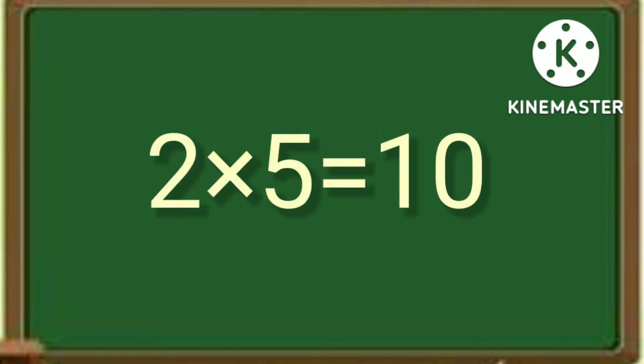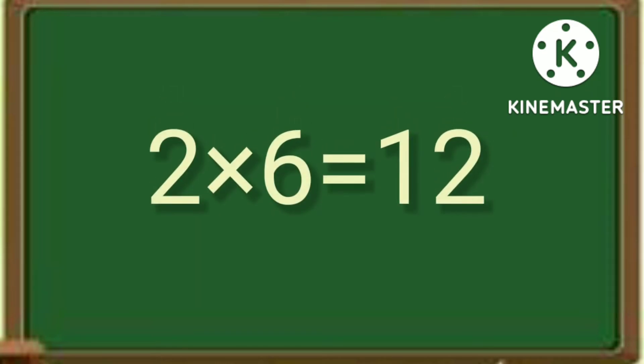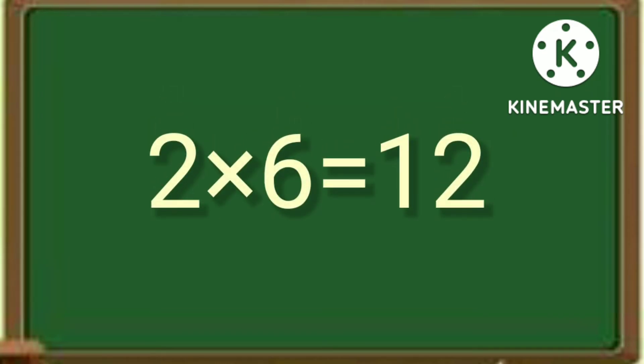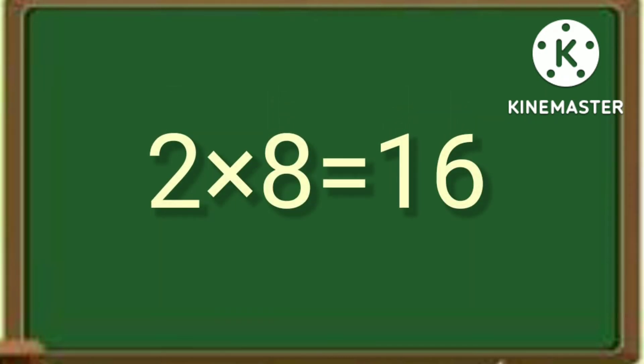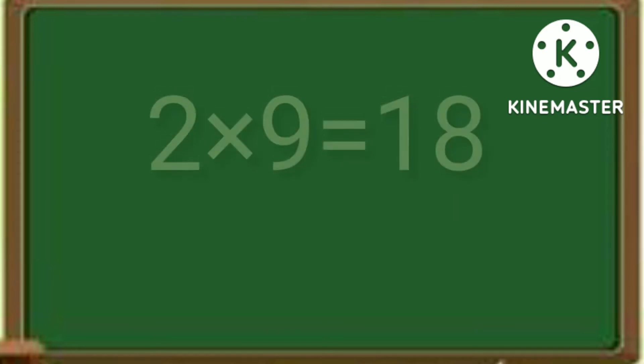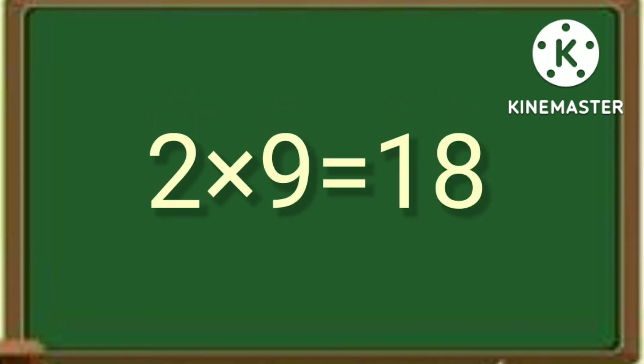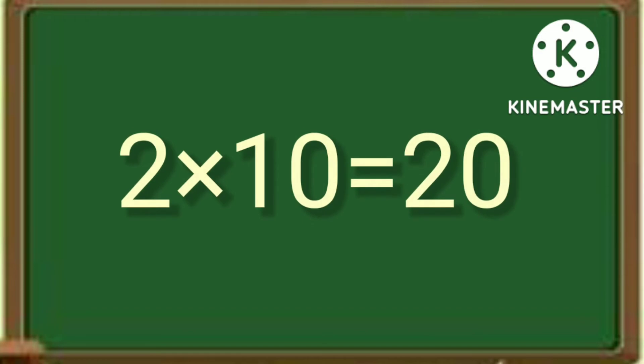2 times 5 is 10, 2 times 6 is 12, 2 times 7 is 14, 2 times 8 is 16, 2 times 9 is 18, 2 times 10 is 20.